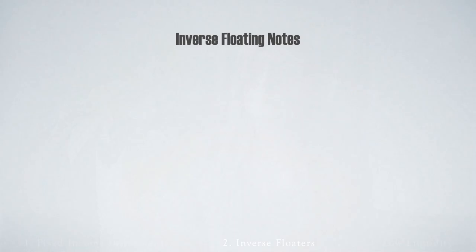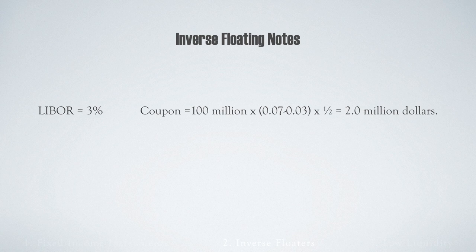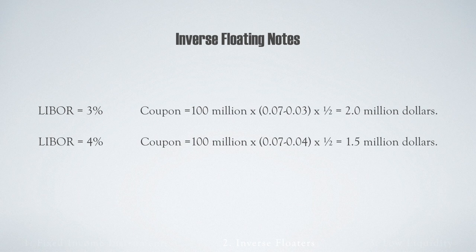For example, suppose the benchmark rate — the LIBOR — equals 3% for a six-month period. The inverse floater would be set at 7%, making the coupon payment equal to 2 million dollars. If the LIBOR jumped to 4%, the coupon payment would fall to 1.5 million dollars. Leveraged inverse floaters were used, thus multiplying the effect on potential yields.